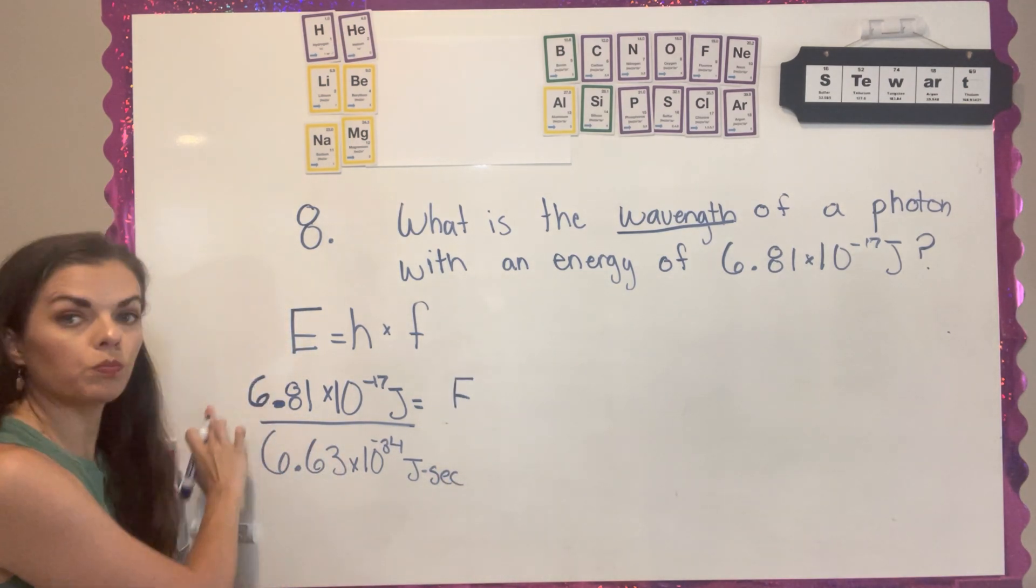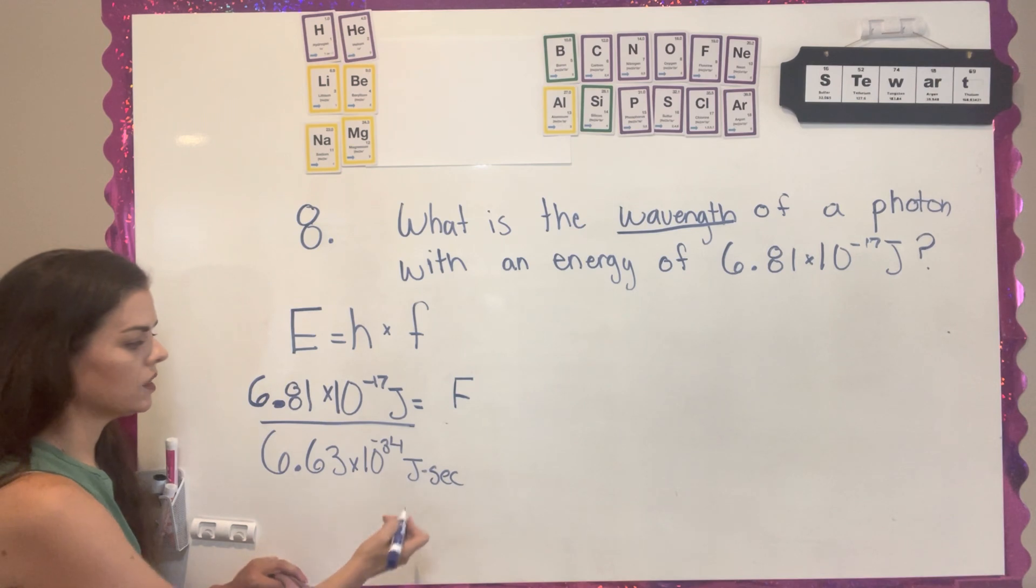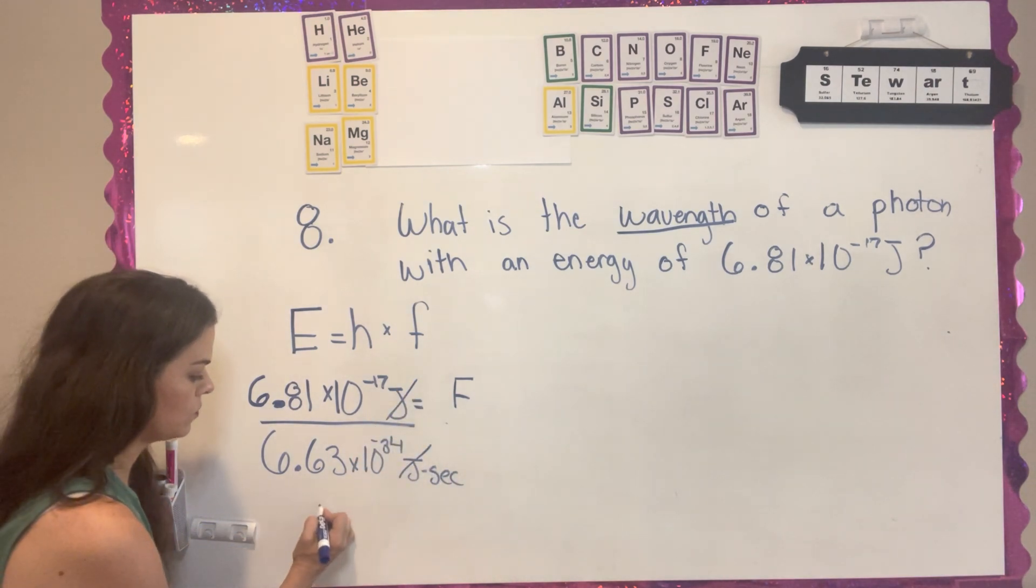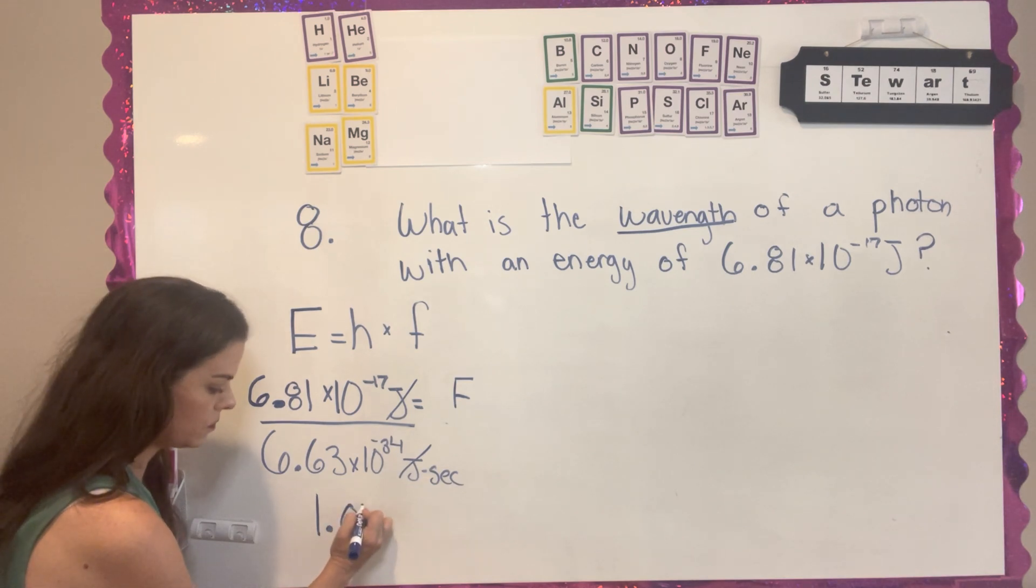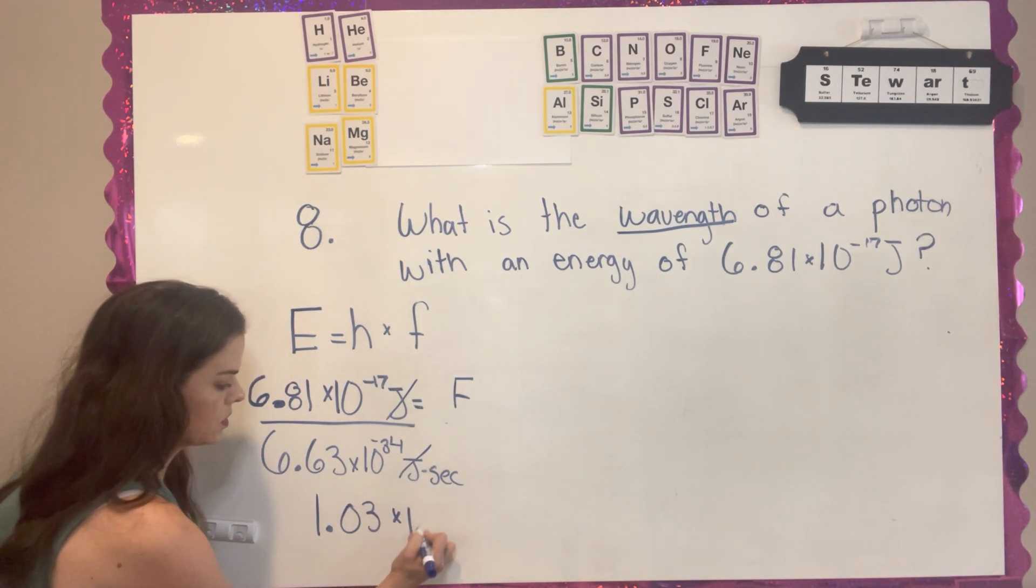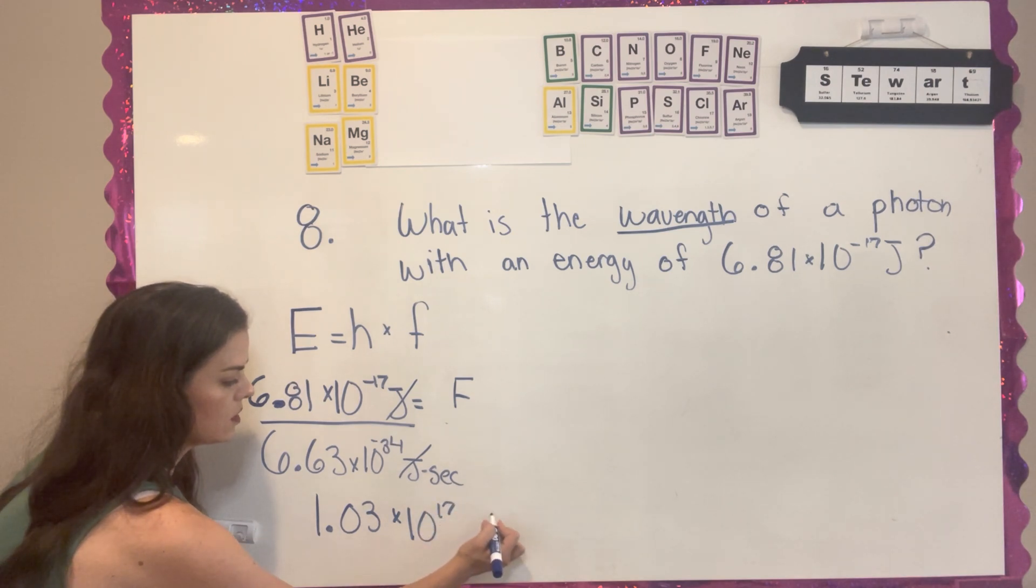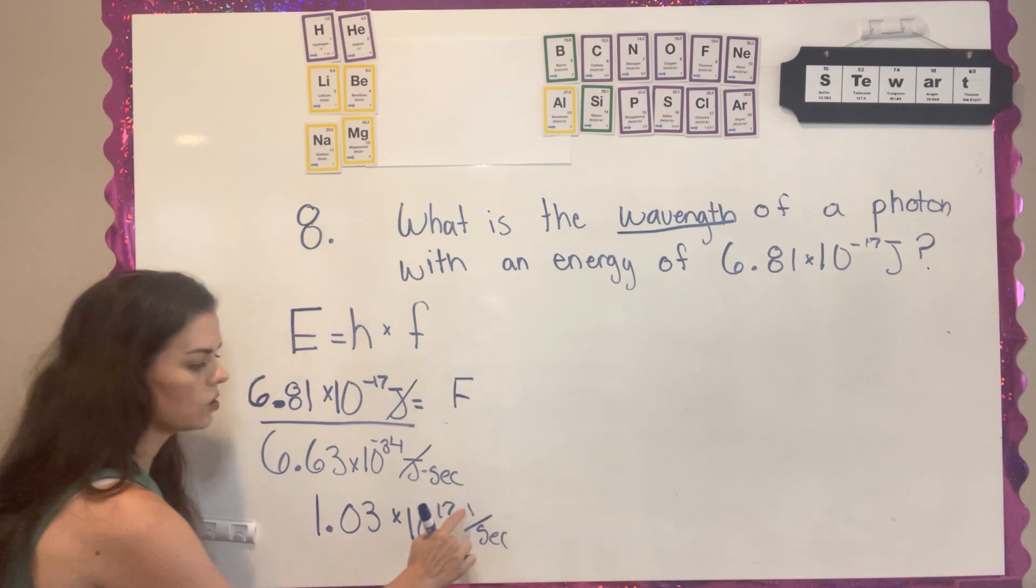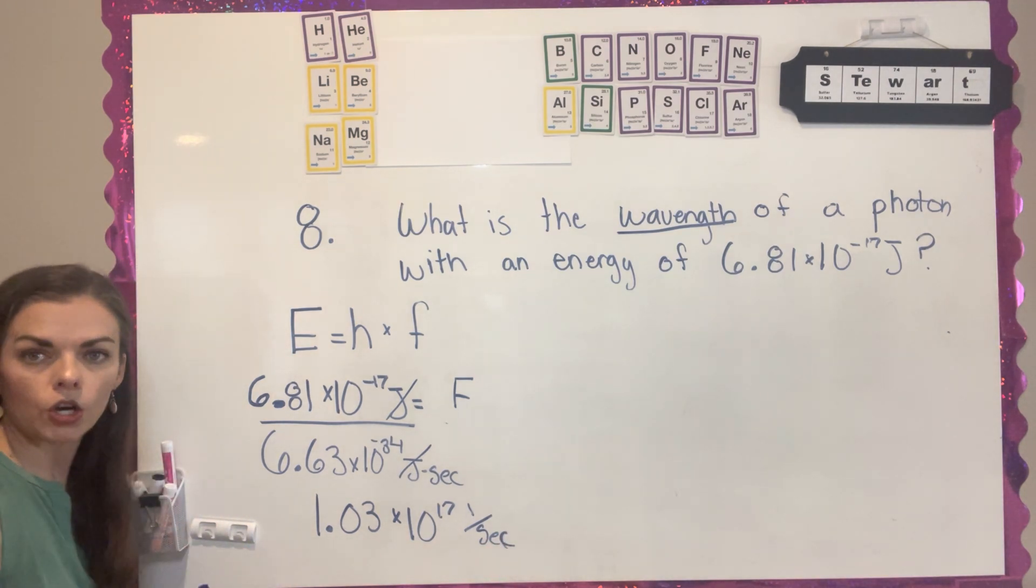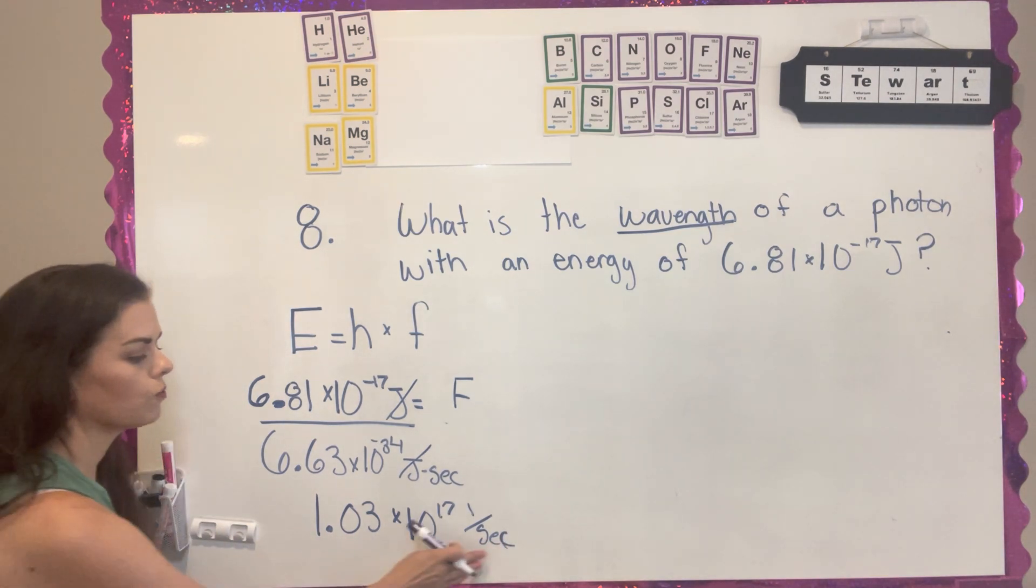Try to keep your units so you can check to make sure your units cancel out. As you do this division, remember parentheses on the top and the bottoms. Joules is going to cancel out, and you're actually going to be left with 1.03 times 10 to the 17th, and that's like 1 over a second, because all you have is the second in the bottom. If you'll remember, that unit is actually a hertz, and so that's a unit for frequency.